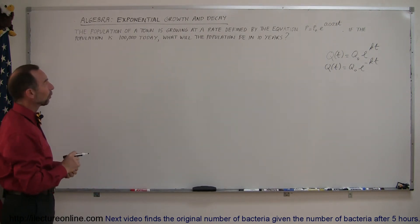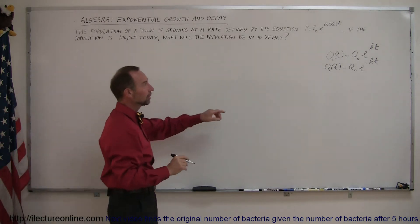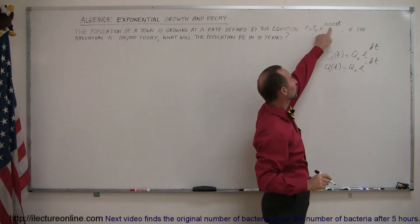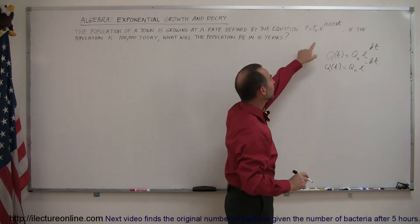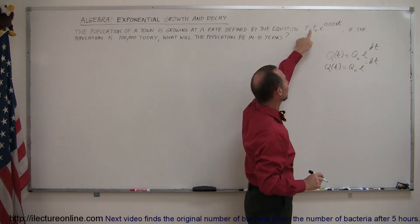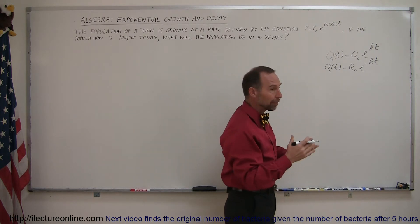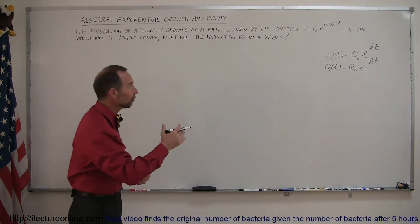The population of a town is growing at a rate defined by the equation p equals p sub nought e to the 0.028t. So clearly this is the growth constant because it's a positive number, so it's a positive k. p initial stands for initial population and p is the population as a function of time in the future.